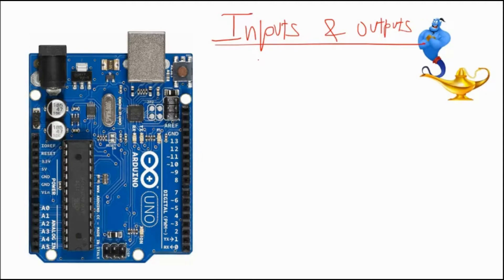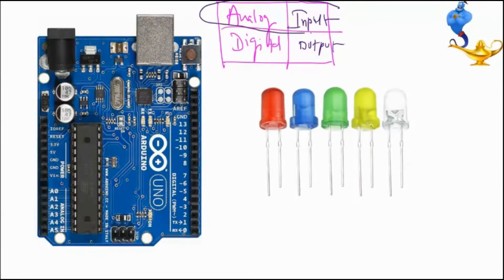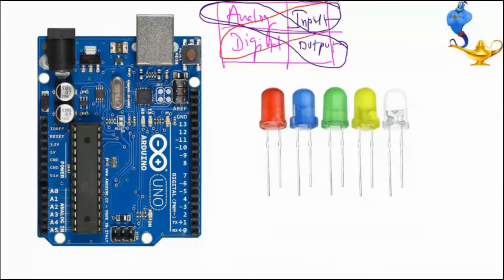Inputs means whatever the microcontroller or Arduino accepts or receives is input. Output means whatever data the microcontroller or Arduino delivers. The four categories are: analog input, analog output, digital input, and digital output — four possible combinations.